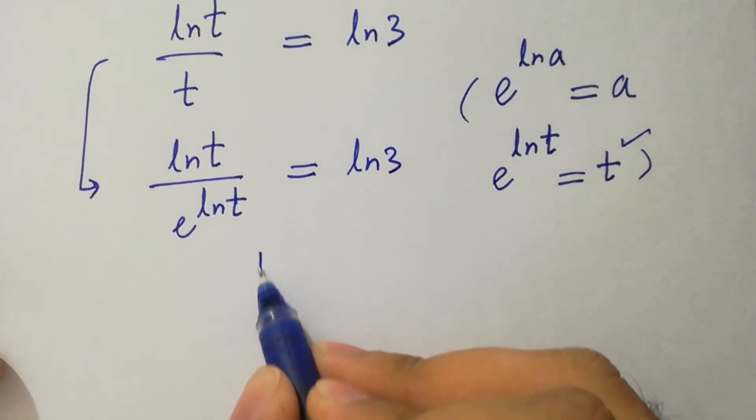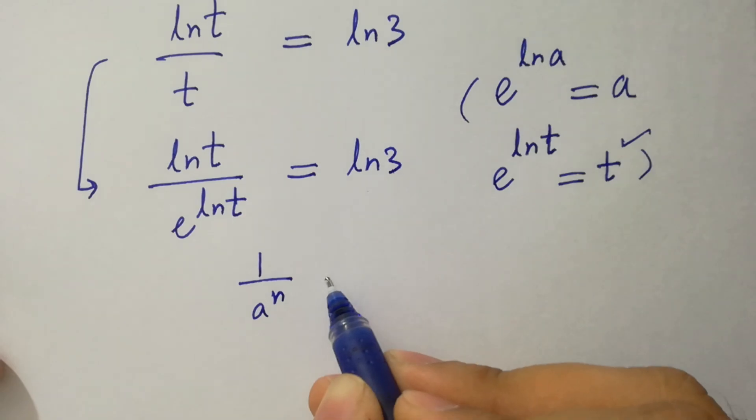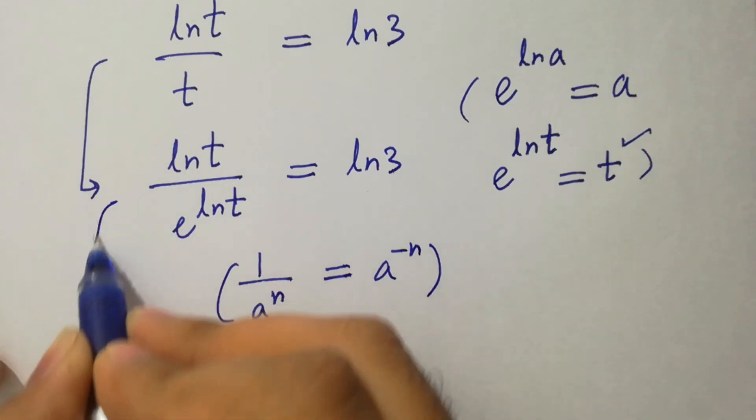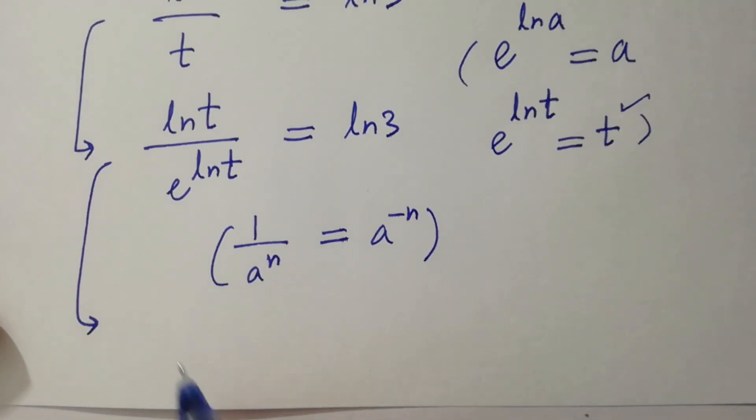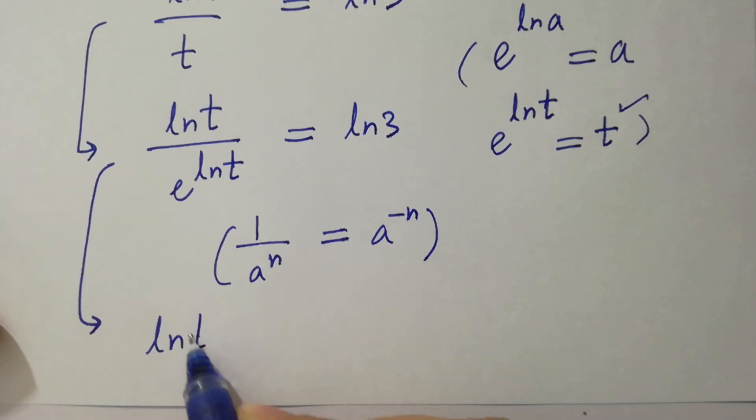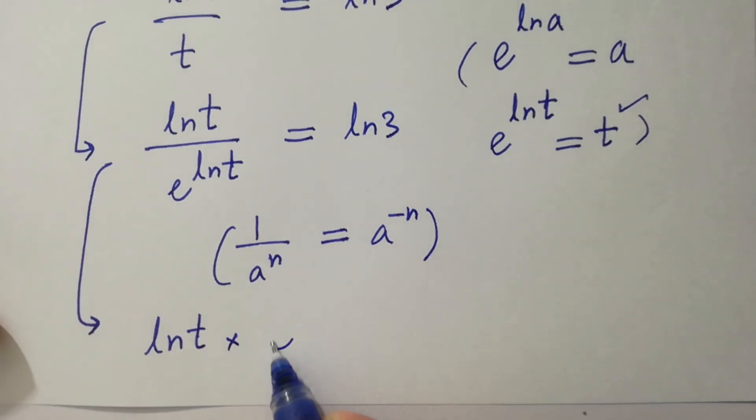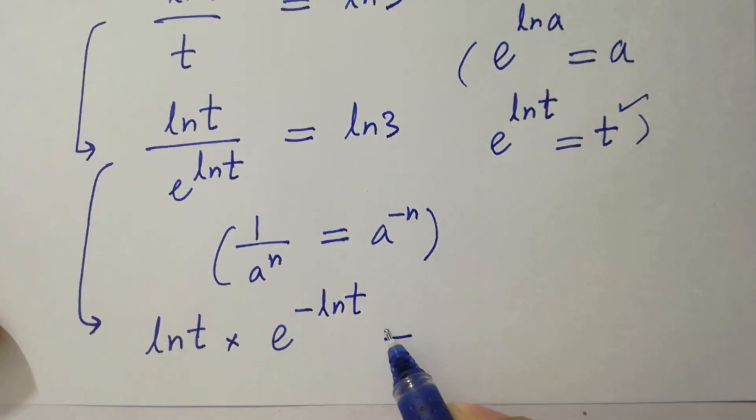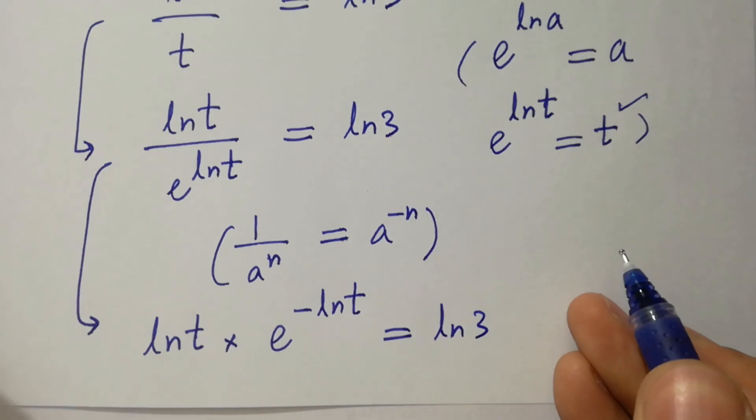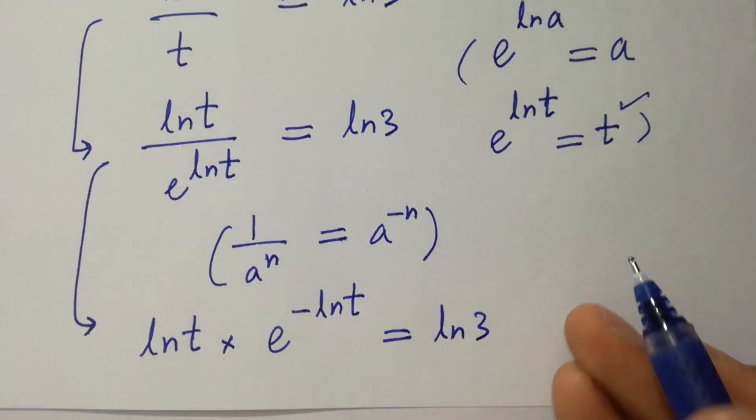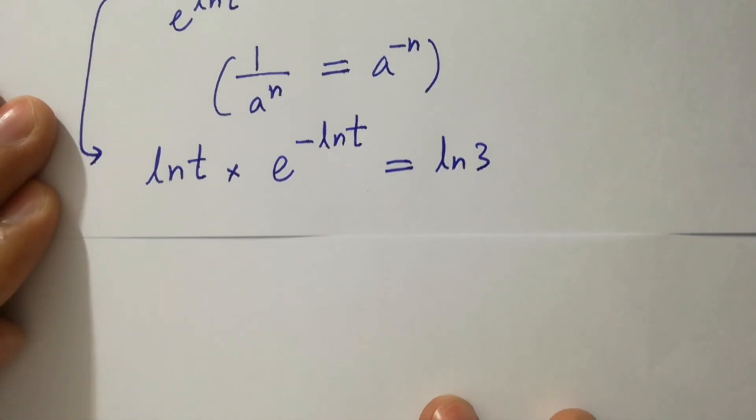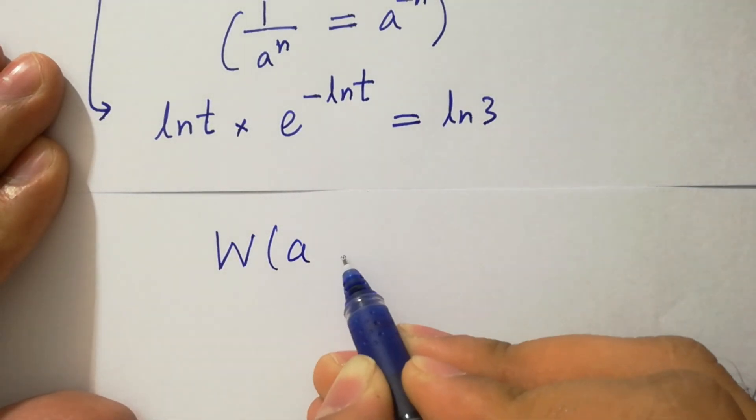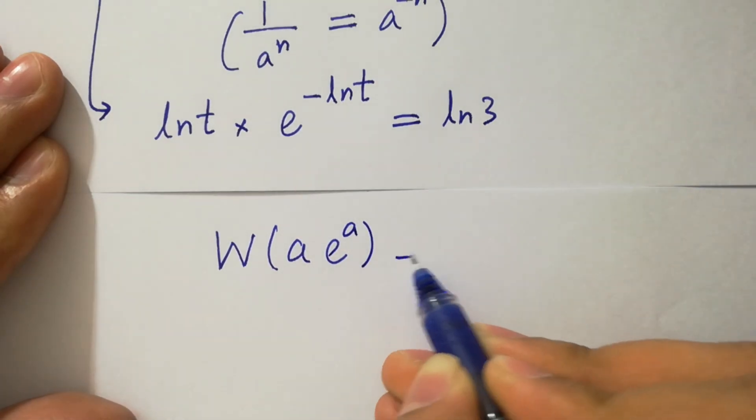As 1 over a to the power n equal to a to the power minus n. Then we have ln t times e to the power minus ln t equal to ln 3. By this we know ln w function w a times e to the power a equal to a.